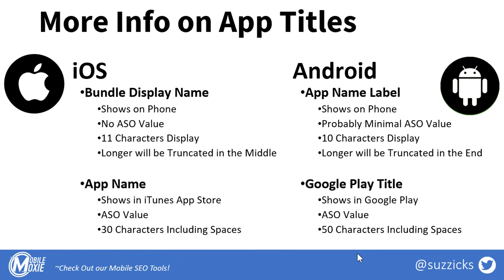On Android, the corollary is the app name label. It's less clear if it has ASO value, but probably if it has any, it's minimal. It seems like this one's character limit is 10, and after that, longer app name labels get truncated at the end. So that is an app title.